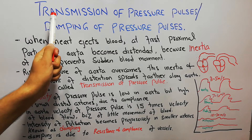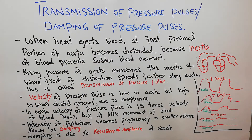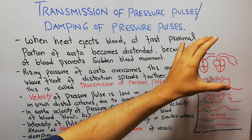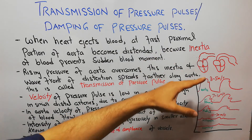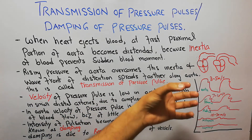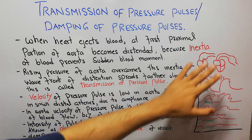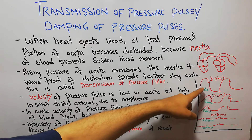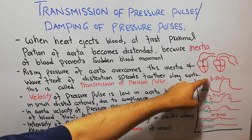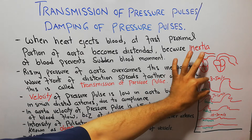Today we are going to discuss the transmission of pressure pulses and damping of pressure pulses. In the last lecture we discussed that when the heart pumps blood into the aorta and small arteries, there is a difference between the pressure in systole and the pressure in diastole — when the heart is contracting in systole and relaxing in diastole. The pressure generated in the vessels is demonstrated with a graph showing pressure in systole and the lower pressure in diastole.